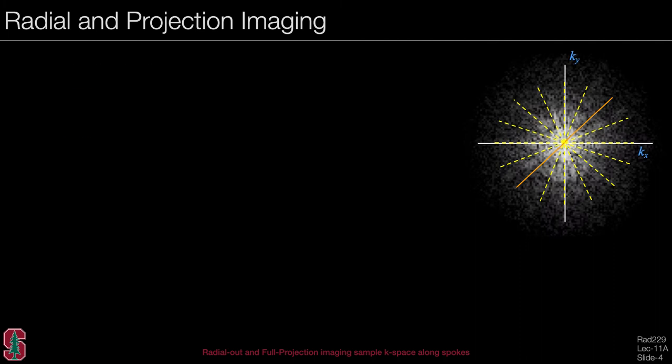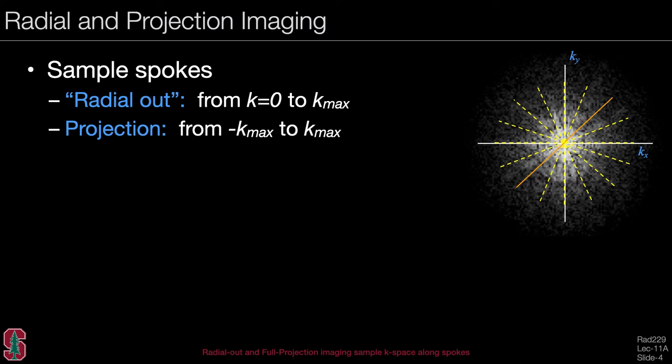In radial and projection imaging, we sample spokes. For this lecture, we define radial out as sampling from the middle out to k-max, and full projection as sampling all the way across k-space from minus k-max to k-max. These terms are used interchangeably in MRI, which can be a bit confusing, but for this lecture we will stick with these definitions.